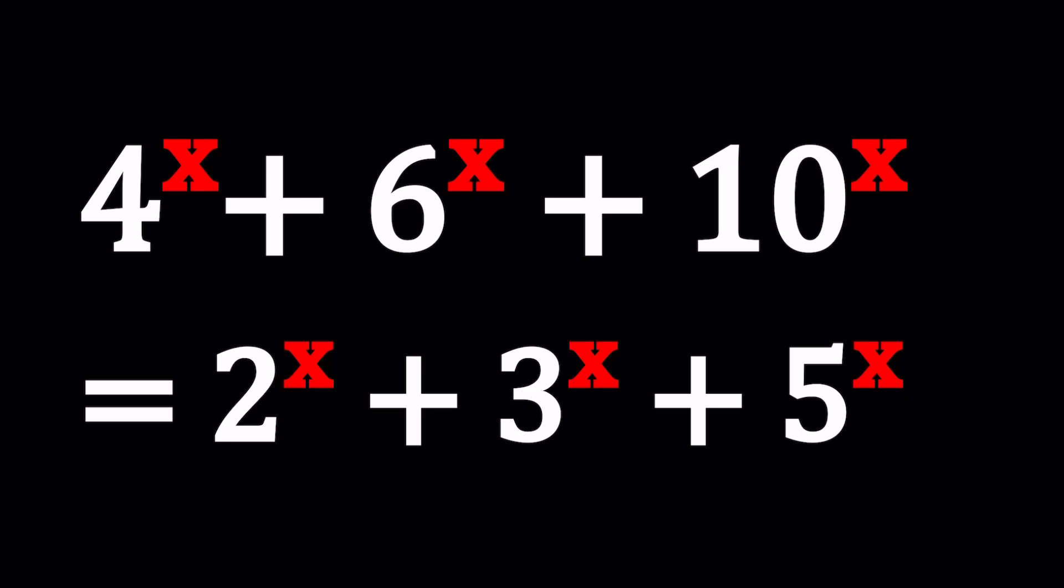We have 3 on the left and 3 on the right, which is kind of good because we have the equal number. So we have 4 to the power of x plus 6 to the power of x plus 10 to the power of x equals 2 to the x plus 3 to the x plus 5 to the x.